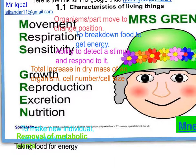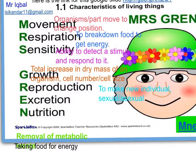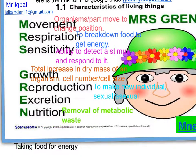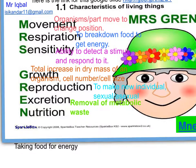Growth may be an increase in the number of cells or in the size of a cell. Reproduction is making a new individual — there are two types: sexual reproduction, which requires two parents, and asexual reproduction, which requires only one parent. Excretion is the removal of metabolic waste, meaning any waste produced as a result of chemical reactions in the body.